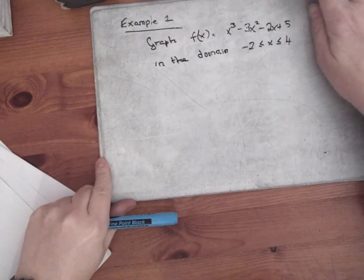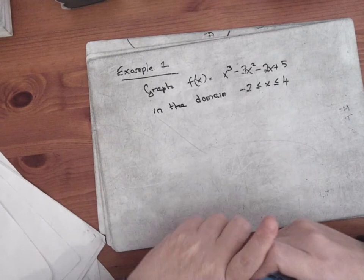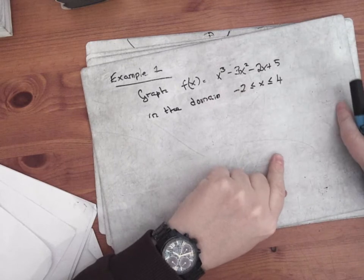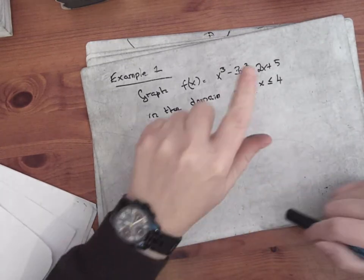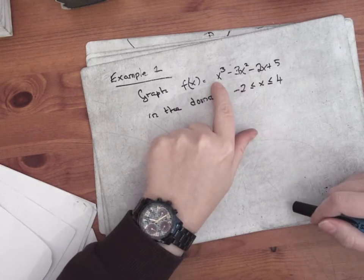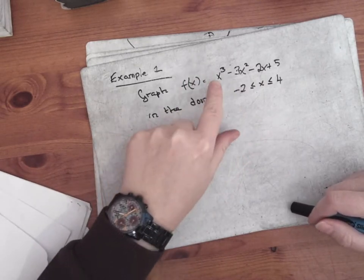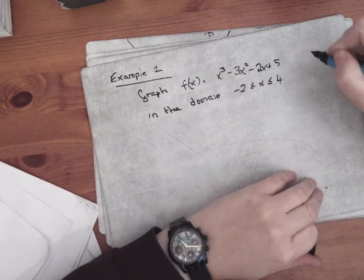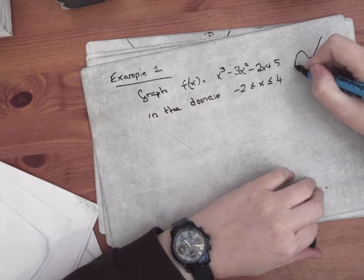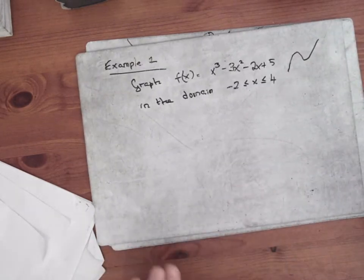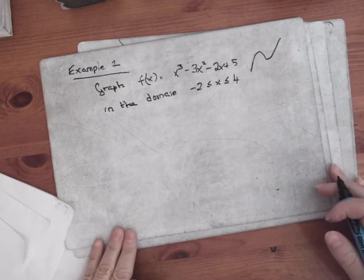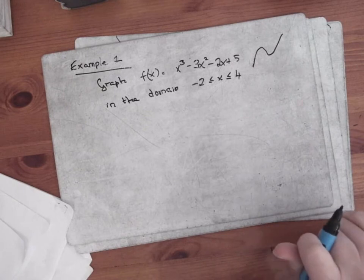Here's an example. We're going to graph x cubed minus 3x squared minus 2x plus 5 from start to finish. It's always handy to know what you're supposed to end up with. The number in front of x cubed — there's no number there, but one is understood to be there and it's positive. So when it's positive, it's going to finish on a high and my graph should look something like that. You have to graph this between minus 2 and 4.